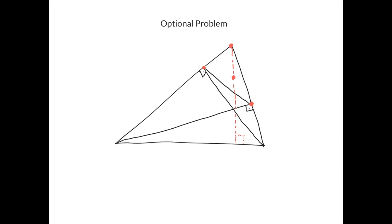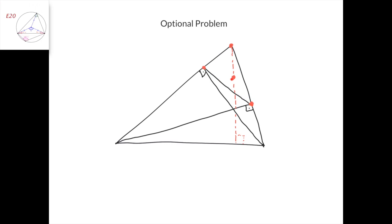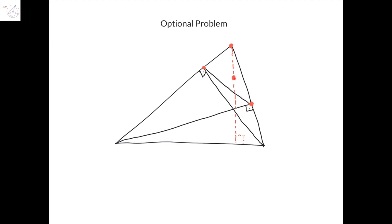Here's the optional problem. We have a triangle, and two of the altitudes in the triangle are dropped, giving us this smaller triangle here with the red vertices — the orthic triangle. We then take its circumcenter, which is this point, and we need to prove that the line formed by this vertex and this circumcenter is perpendicular to this base of the triangle. So we need to prove that this angle is 90 degrees.